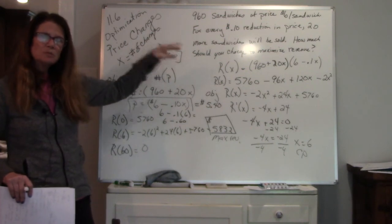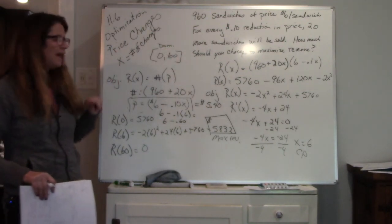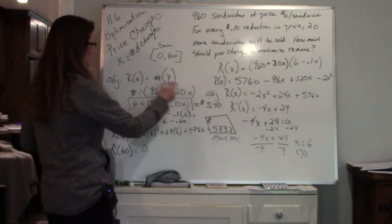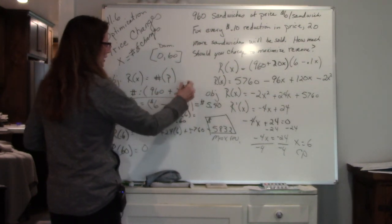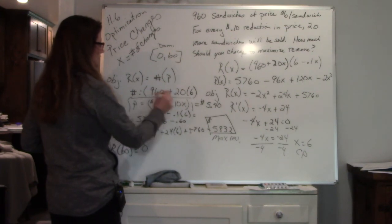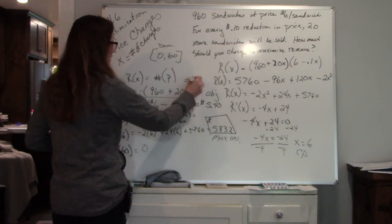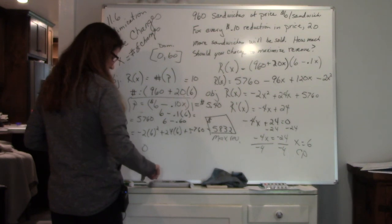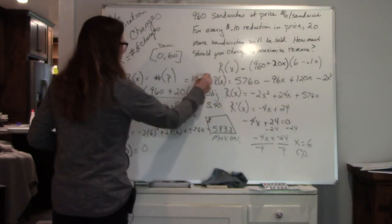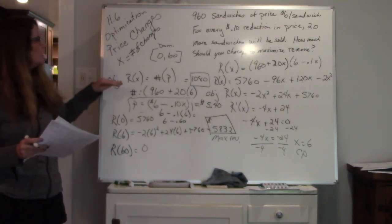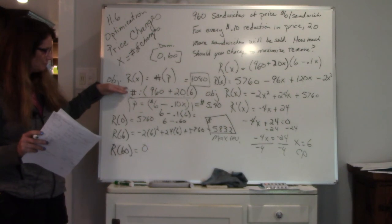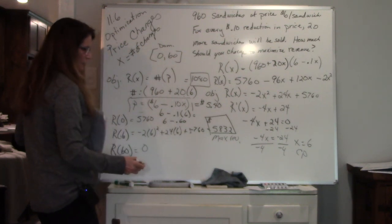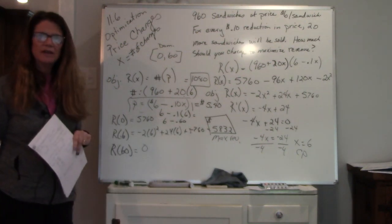Now, this question is not in this particular one, but you may see it. If it asks for, how many sandwiches are you going to sell to make maximum revenue? Well, you come back up here to the number. You take out the number of price changes, and you put in the 6 that you got. So it's 960 plus 120. So you're going to sell 1,080 sandwiches. That's how many sandwiches you're going to be able to sell. So when I sell 1,080 sandwiches at $5.40 a sandwich, my maximum revenue is $5,832, and that's a price change function.